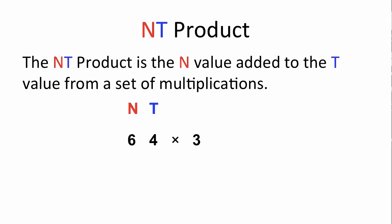Let's have a look at an example. Here we have 64 times 3, but we're actually going to treat it as 6 times 3 and 4 times 3. So 6 times 3 is 18, and we want the N value of this particular one, so we want the whole 18.